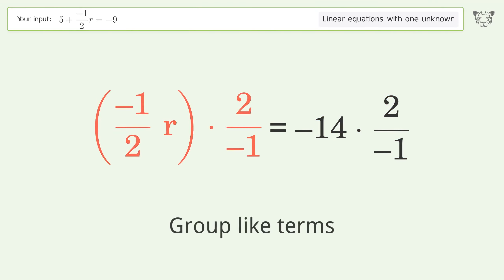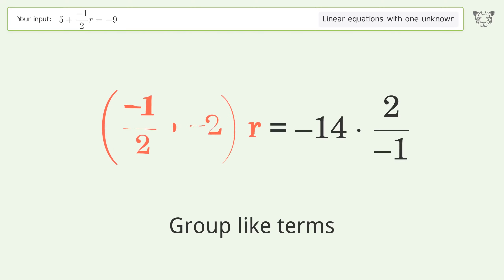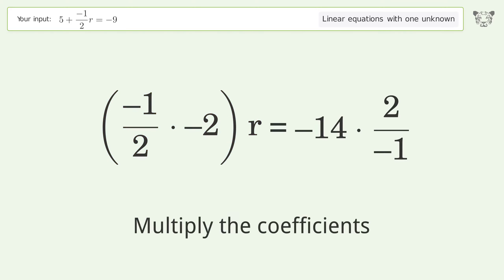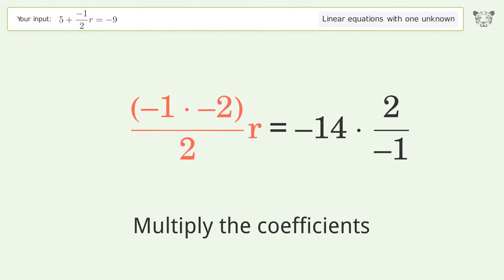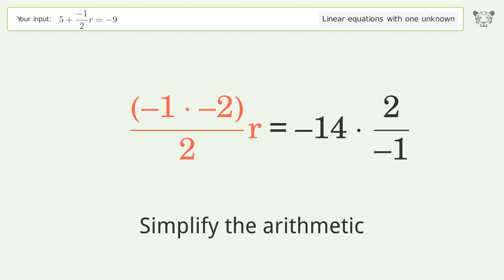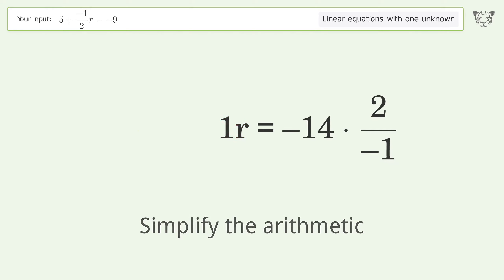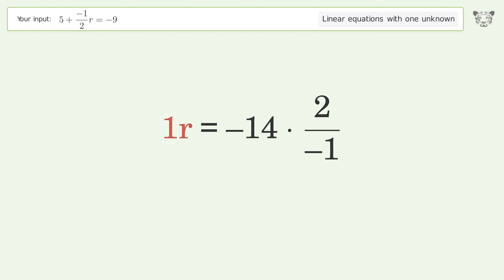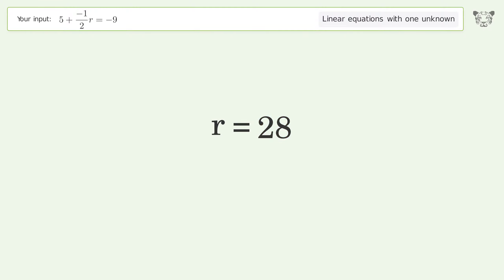Group like terms, then multiply the coefficients, and simplify the arithmetic. And so the final result is r equals 28.